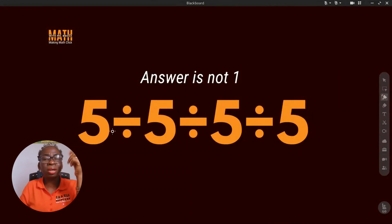Some people solved this and they got one as the answer. How did they get one? They said 5 divided by 4 equals 1, then divided by 5 divided by 4 equals 1, and 1 divided by 1, I mean 5 divided by 5 and 1 divided by 1 equals 1. This is wrong.